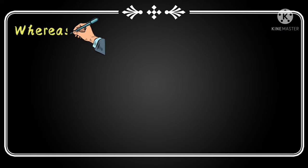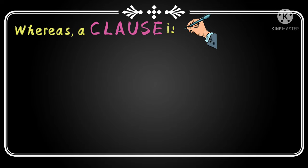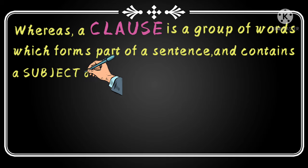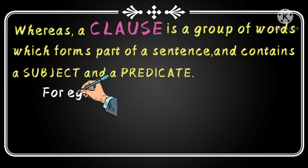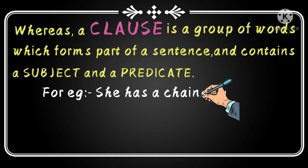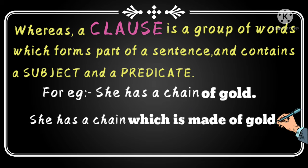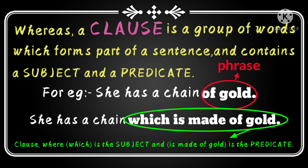A clause is a group of words which forms part of a sentence and contains a subject and a predicate. For example: 'She has a chain of gold' versus 'She has a chain which is made of gold.' In the first sentence, 'of gold' is a phrase because it contains neither a subject nor a predicate. In the second sentence, 'which is made of gold' is the clause, which contains both the subject and the predicate and is complete in itself.